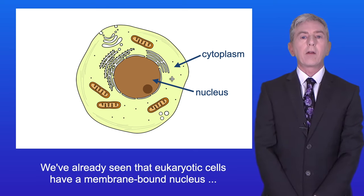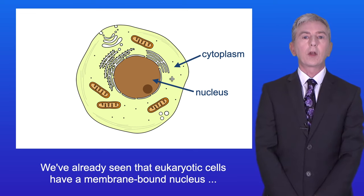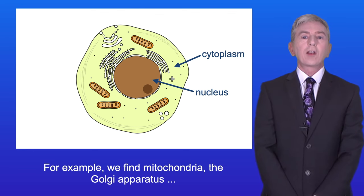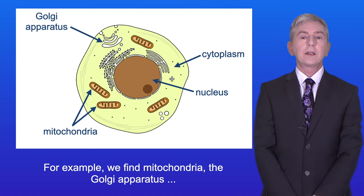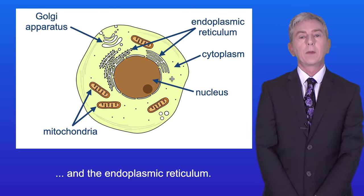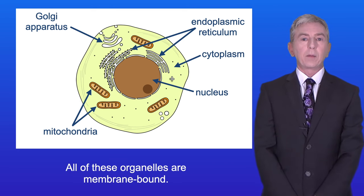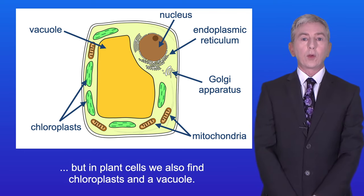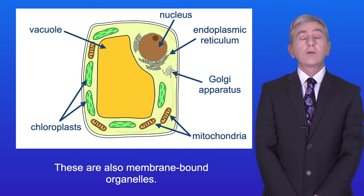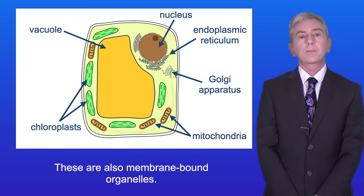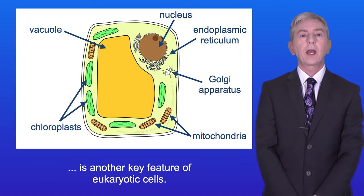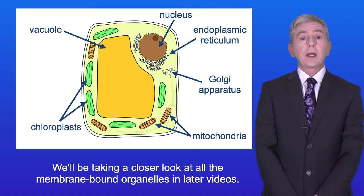We've already seen that eukaryotic cells have a membrane-bound nucleus, but they also contain a number of other membrane-bound organelles. For example, we find mitochondria, the Golgi apparatus and the endoplasmic reticulum, and all of these organelles are membrane-bound. We find the same organelles in plant cells, but in plant cells we also find chloroplasts and a vacuole, and these are also membrane-bound organelles. So the presence of membrane-bound organelles is another key feature of eukaryotic cells, and we'll be taking a closer look at all the membrane-bound organelles in later videos.